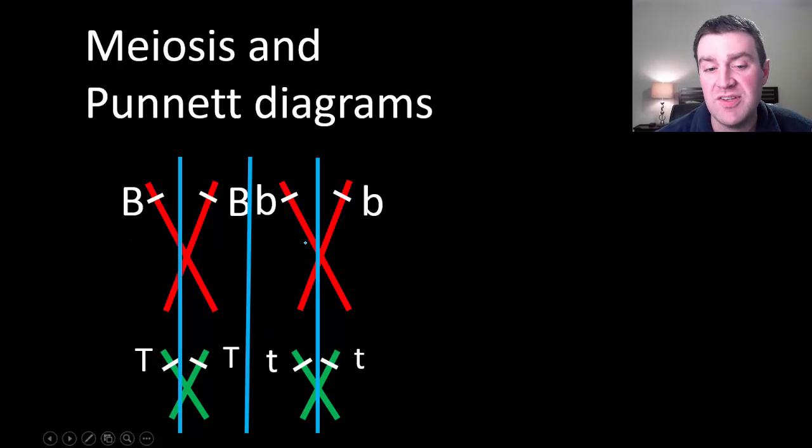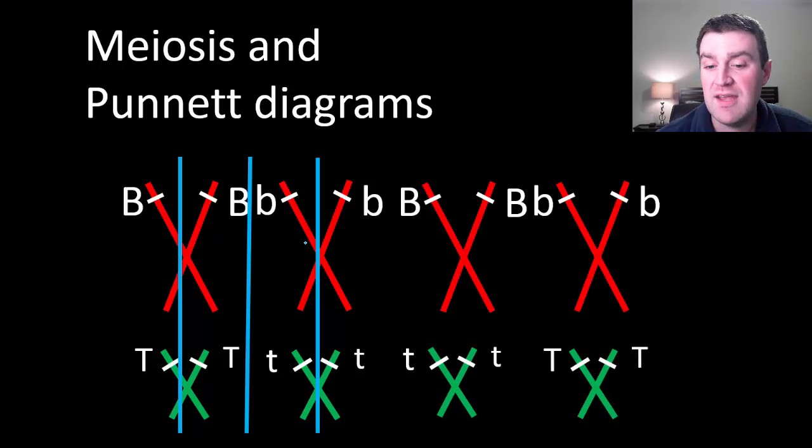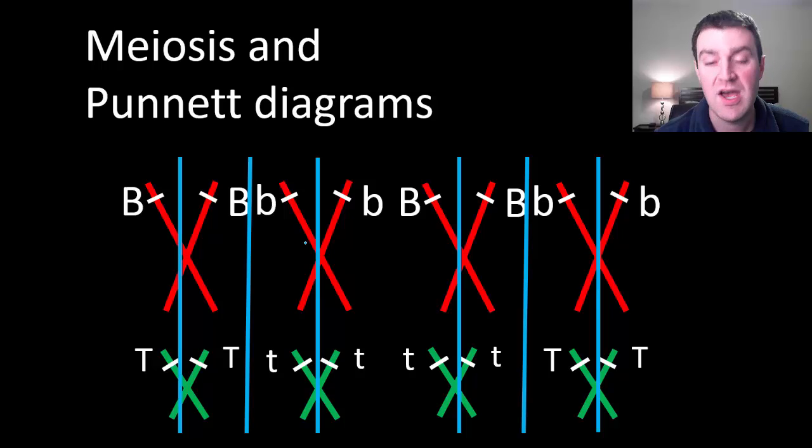But remember that we could also if another cell were to go through the same process, maybe in the lineup they would line up this way and I would call that independent assortment. And maybe when they split the pairs and then the X copies we could just as easily have a dominant B be paired with a recessive T in a set of gametes.